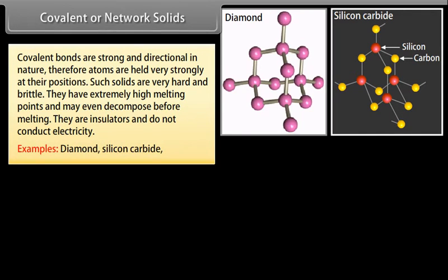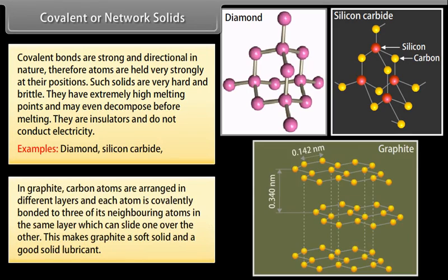In graphite, carbon atoms are arranged in different layers and each atom is covalently bonded to three of its neighboring atoms in the same layer which can slide one over the other. This makes graphite a soft solid and a good solid lubricant.